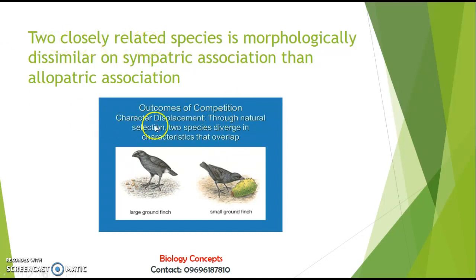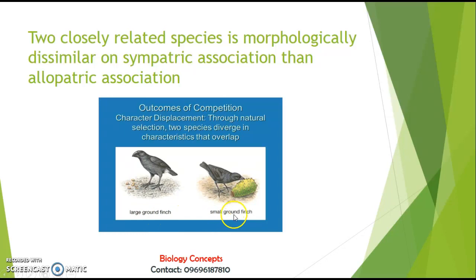Through natural selection, two species diverge in characteristics that overlap. In this figure, you can easily see large ground finches and small ground finches — according to their needs, they have evolved their beak size.